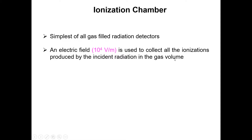Later on in these lectures, we will have a diagrammatic mechanism of how the radiations produce the ion pairs and what is the role of the applied voltage. This kind of radiation detector works with the applied field of that magnitude to collect the ionization produced by the incident radiations.